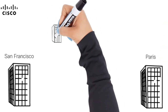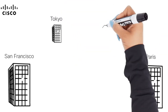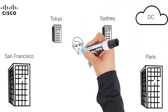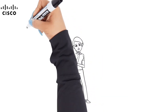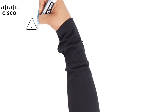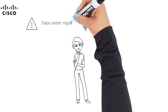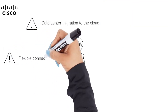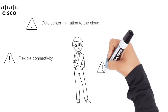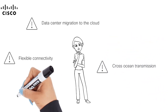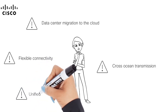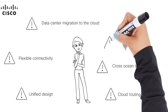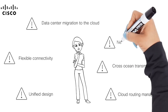Our engineer Anna needs to update one design, taking into account branches in multiple far-off locations and a data center being migrated into the cloud. These requirements make Anna think about a few difficulties she may face, such as reachability to the data center after migration, access to a flexible and highly available network from any place, management of cross-ocean transports, ensuring unified design among all locations, possibility to configure routing in the cloud, and ensuring network visibility inside cloud resources.